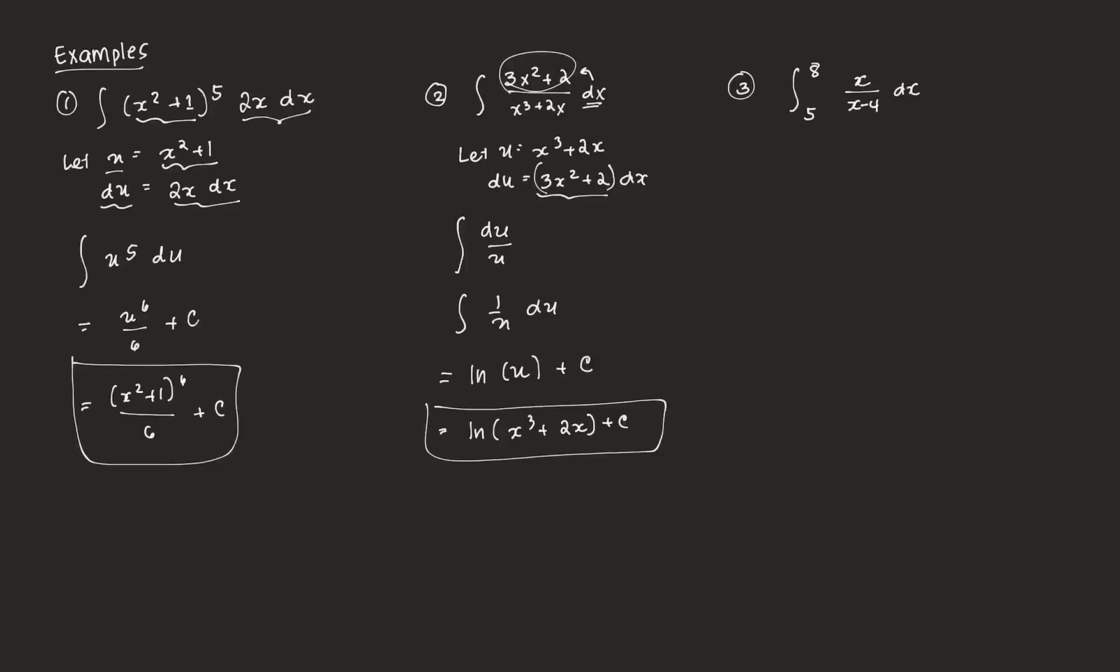Now we have an example which is a definite integral. We're going to try to solve that example by integration by substitution. In this case, let u be equal to x minus 4, that's the denominator.